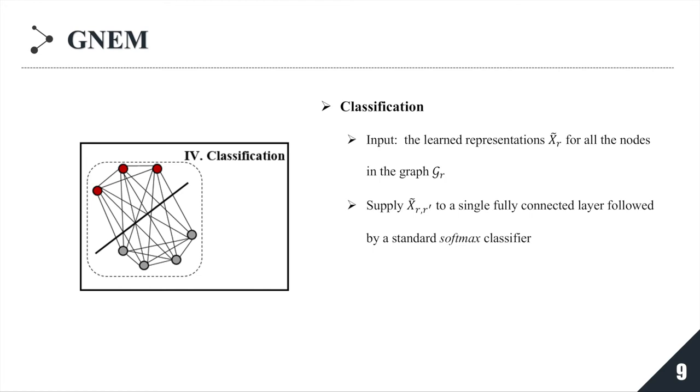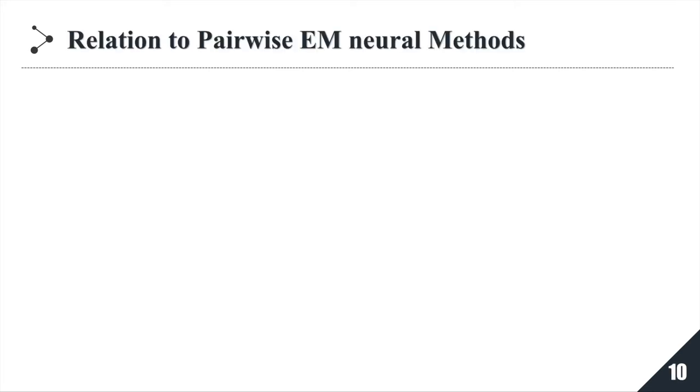One thing to note, each record pair will appear in two graphs. We fuse the two matching probabilities by averaging. Our GNEM is a generic one-to-set neural framework for entity matching, but it can also be viewed as an extension or generalization of the existing pairwise entity matching methods.